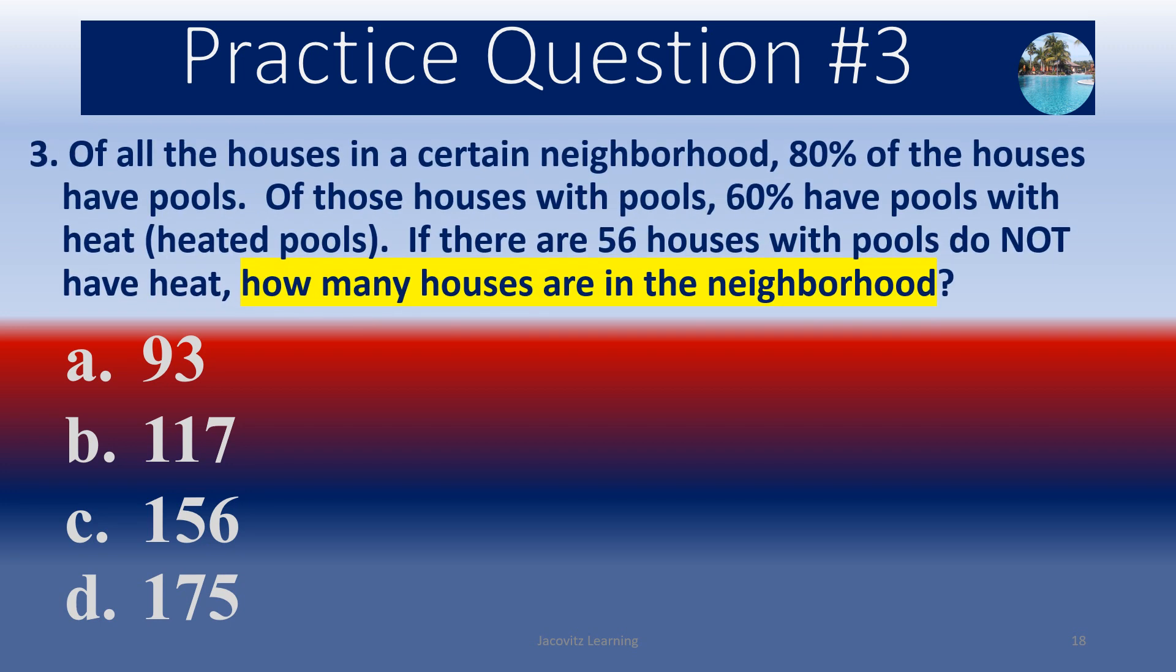Practice question 3. Of all the houses in a certain neighborhood, 80% of the houses have pools. So your mind's got to be thinking you can go ahead and skip and jump to conclusions and think that 20% don't. But we don't really have to do that. We have to look at the evidence that's here and think about containing this information. Of those houses with pools, 60% have pools with heat, and I put heated pools here. If there are 56 houses with pools that do not have heat, how many houses are in the neighborhood? But again, this question is taken from a real SAT. The only thing is we have pools substituted for, I think it was garages. So we have pools substituted with garages. The numbers are actually real. So you can get scared, let this information intimidate you, but try not to.